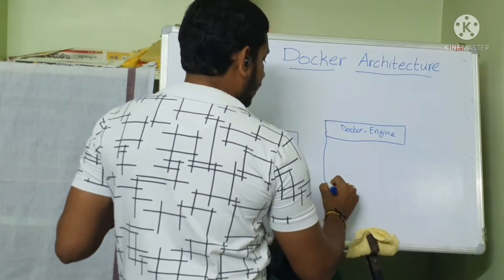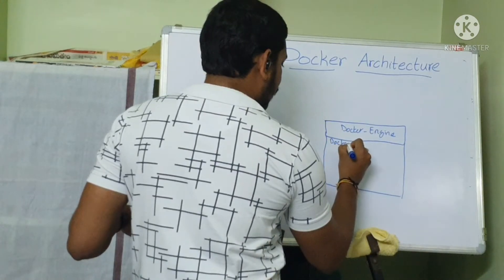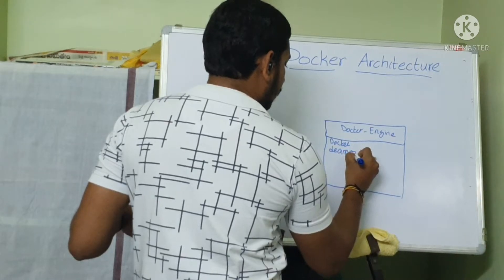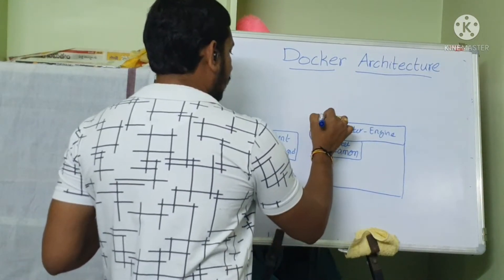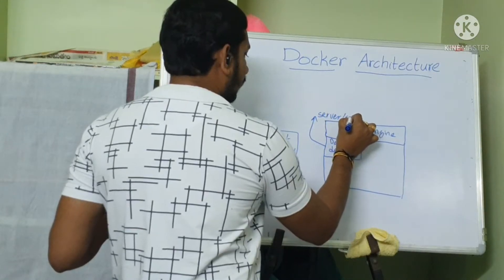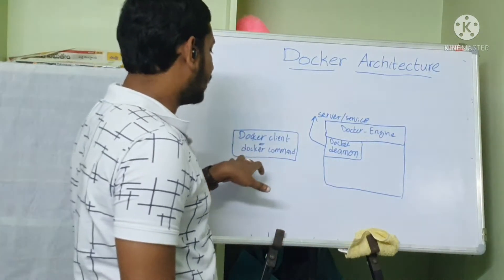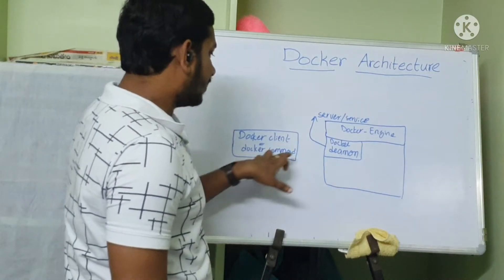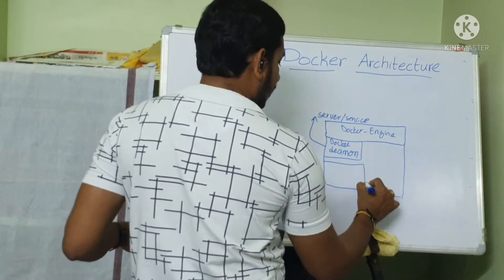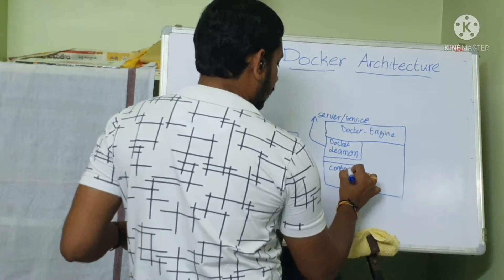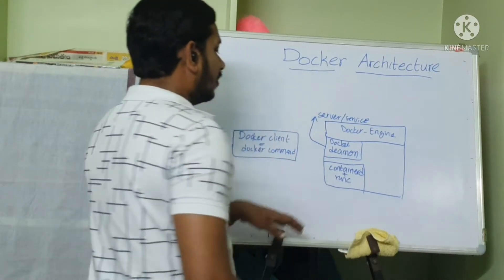This Docker engine consists of a few components, that is Docker daemon. Docker daemon is nothing but — if the client is on one side, this is the server or service. Whenever you run a Docker command, it reaches the Docker daemon, then it will connect to containerD. This is called the Docker runtime.